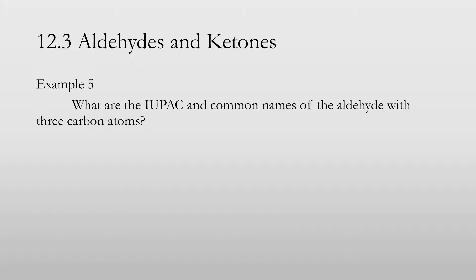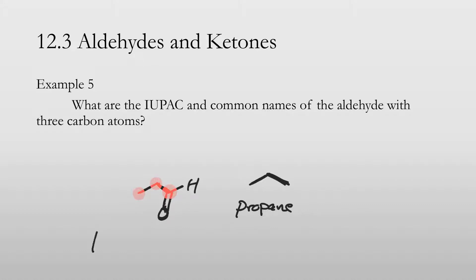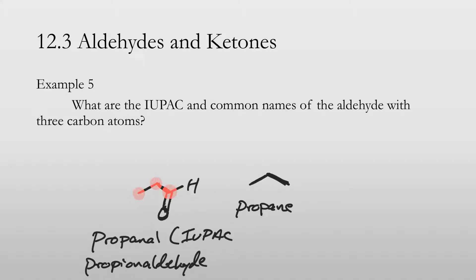Example 5 asks for the IUPAC and common names of the aldehyde with three carbon atoms. Drawing it out: one, two, and three carbons, with the aldehyde group at carbon one. It comes from propane, so the IUPAC name is propanal, and the common name is propionaldehyde.